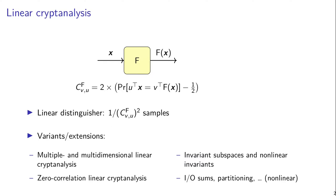We do this for a permutation or a function f, which can be for example a block cipher or a cryptographically secure permutation. And if this is a strong block cipher,